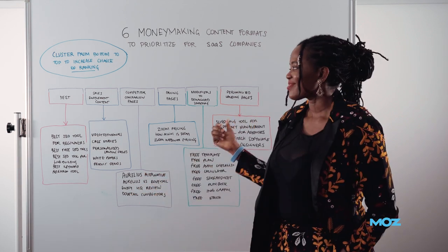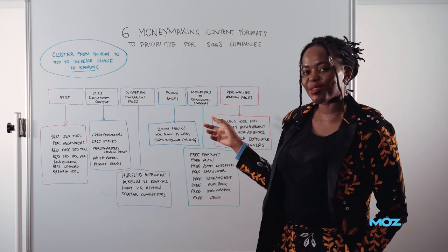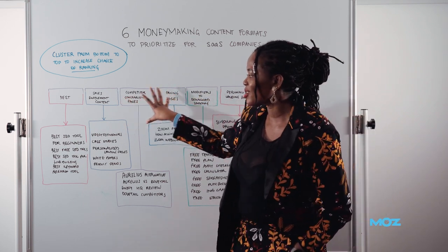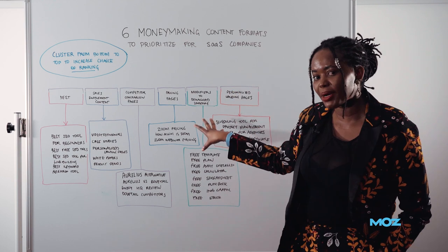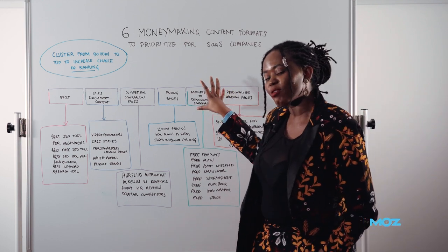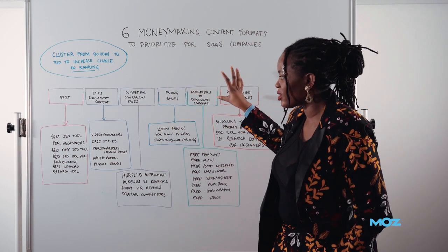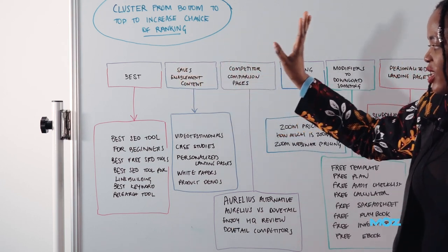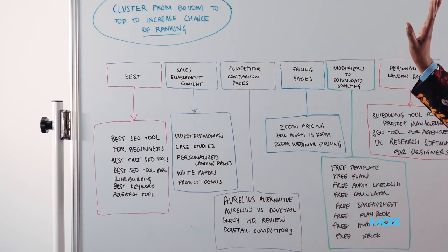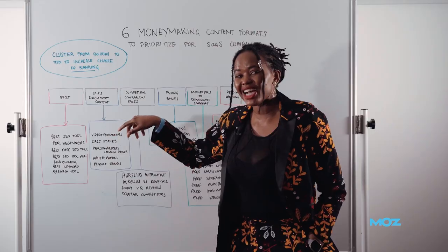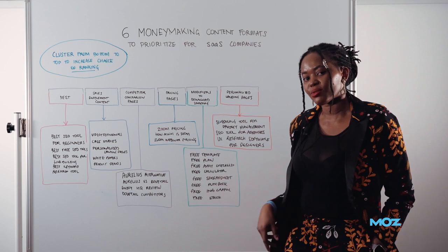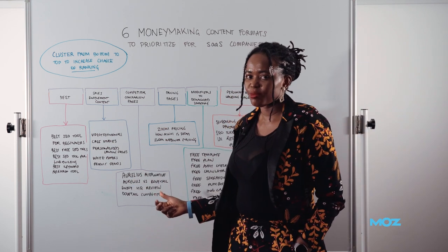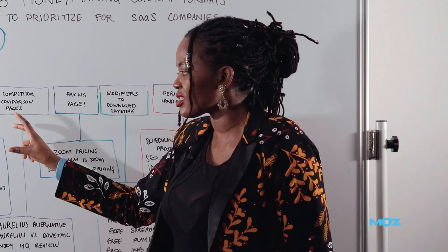Don't get greedy. Now I'm going to show you six content formats that I think have the most impact for money-making at the bottom of the funnel. The first one is the best-of keyword. This keyword is so good because it actually fits into the funnel at the middle or at the bottom. It's also a review type of content.